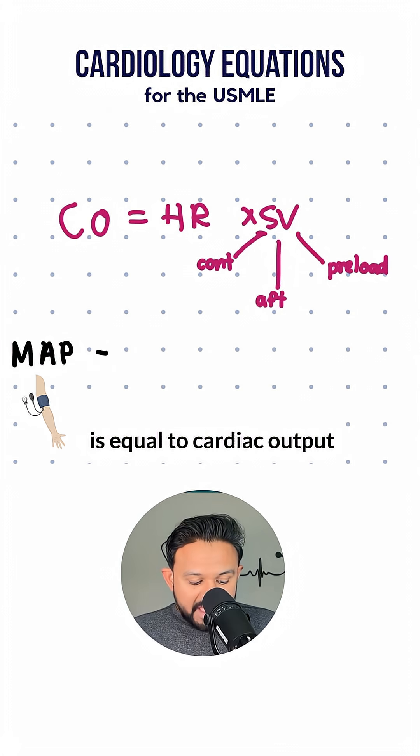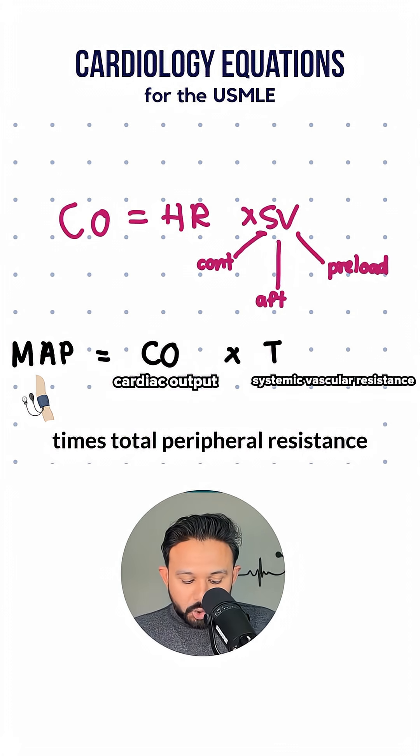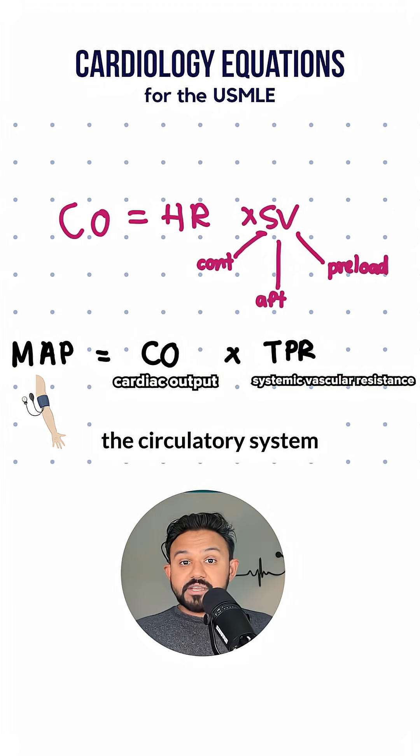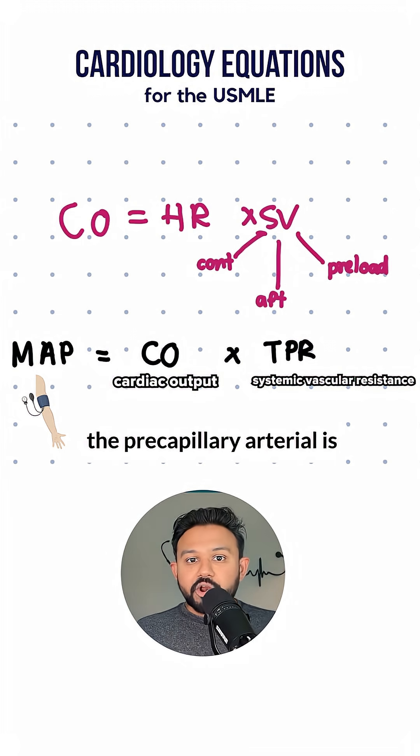So mean arterial pressure, which is MAP, is equal to cardiac output times total peripheral resistance. It's the flow through the circulatory system times how tight the precapillary arterial is.